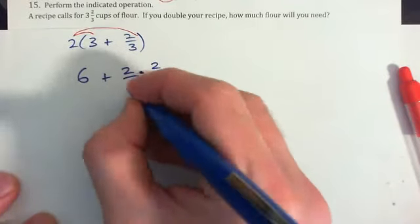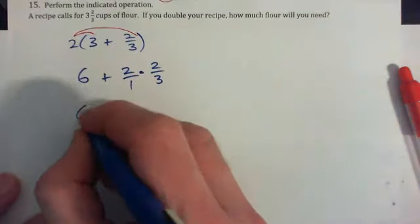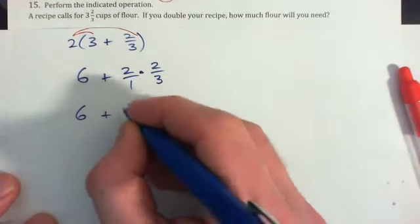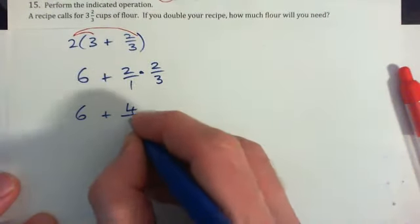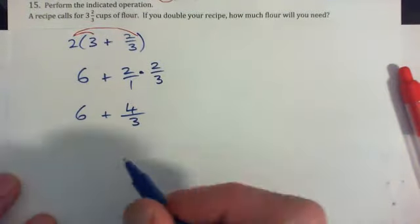But we can write the two as two over one, right? So two times two, multiply the tops, four. One times three is three. So we have six plus four-thirds.